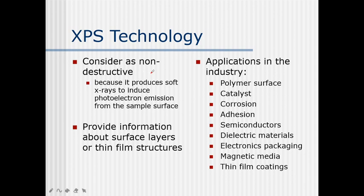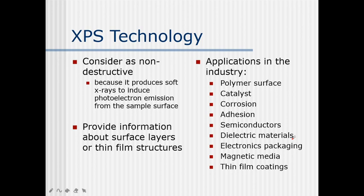XPS technology is considered non-destructive because it produces soft X-rays to induce photoelectron emission from the sample surface. It provides information about surface layers or thin film structures. By comparing to libraries, we can identify unknown samples and understand binding energies and structures. Applications of XPS technology include: polymer surfaces, catalysts, corrosion, adhesion, semiconductors, dielectric materials, electronics packaging, magnetic media, and thin film coatings.